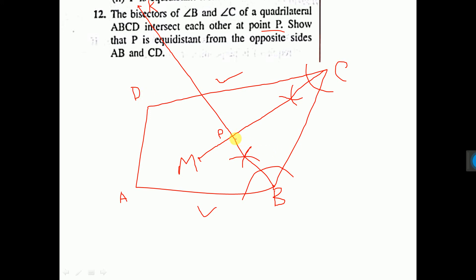Therefore, P is equidistant from AB and CD. It is proved. Do you understand?